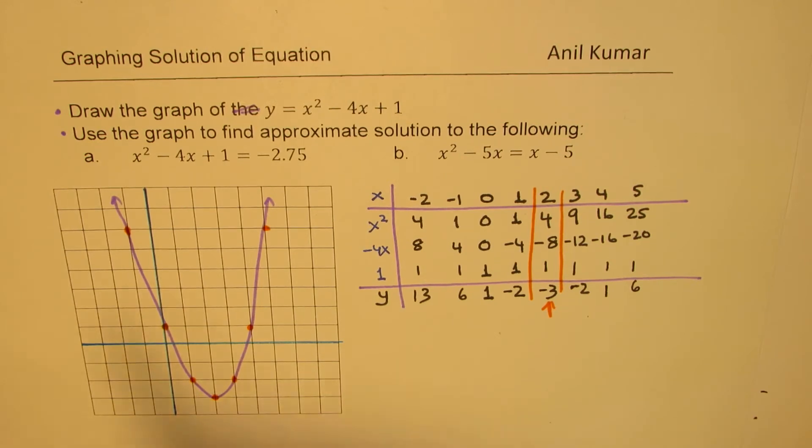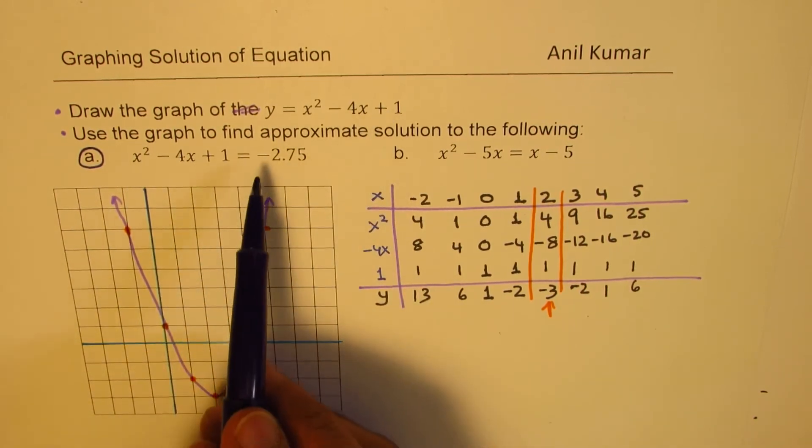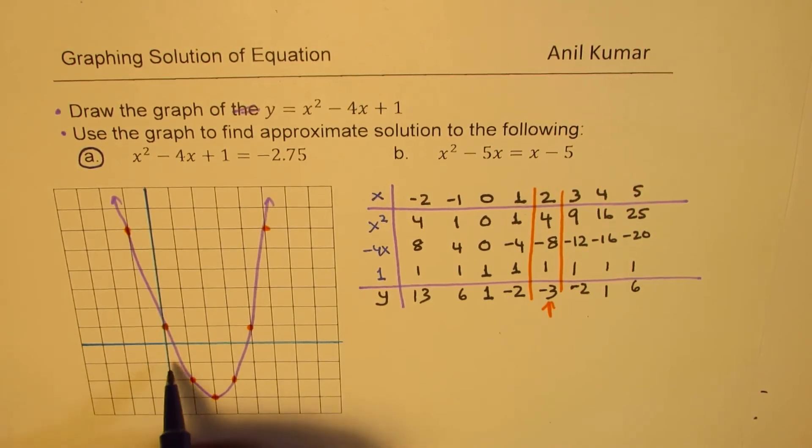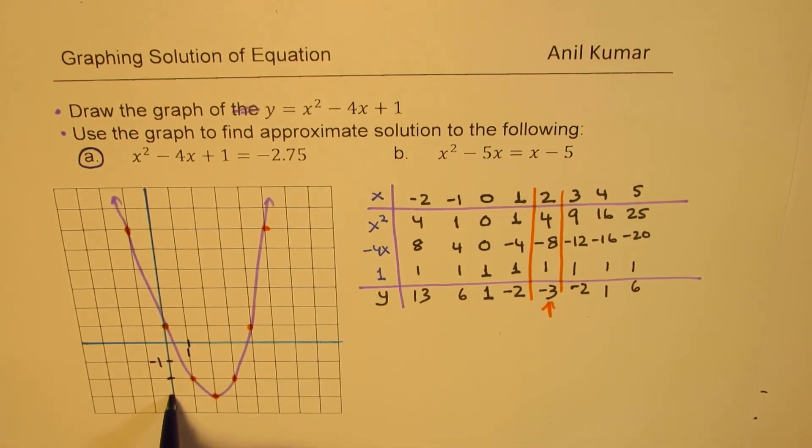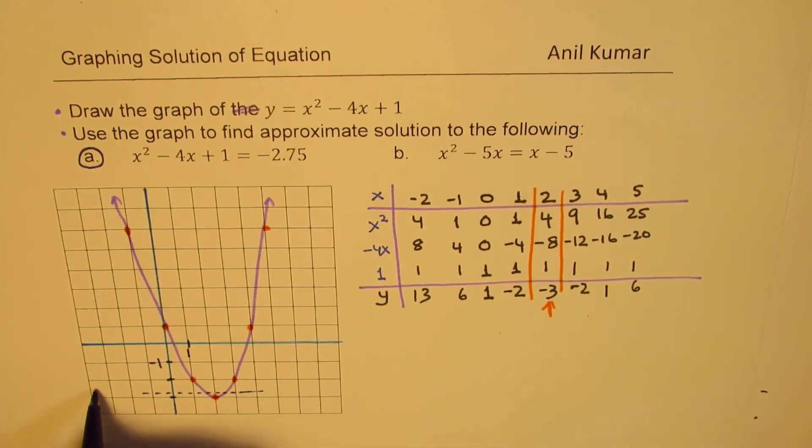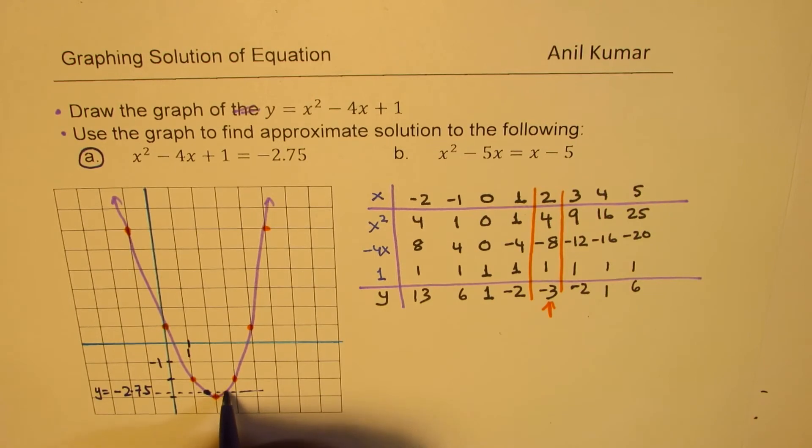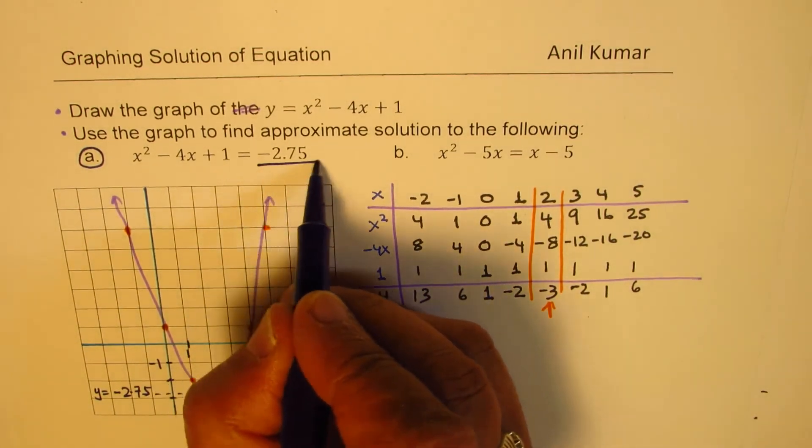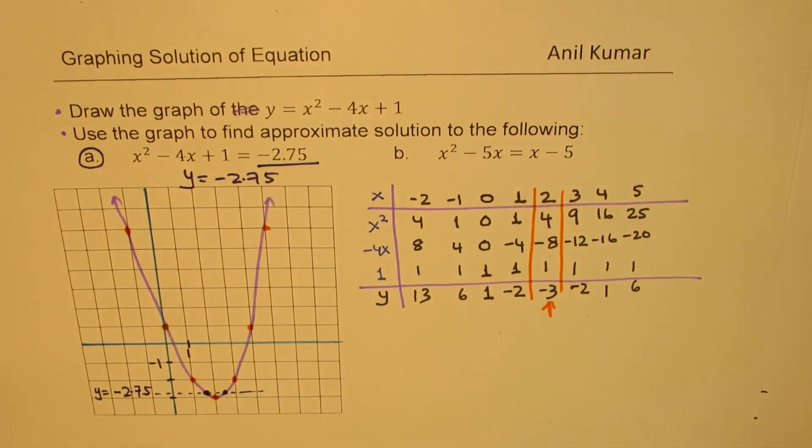Now the second part is to find the solution of this equation, x squared minus 4x plus 1, the graph of which we are given, equals to minus 2.75. Okay, so that is minus 1, this is plus 1. So minus 2, that is minus 3, which is the minimum. So 2.75 will be kind of here. So this is our line, which is y equals minus 2.75. So these two points on the graph are the solutions. So the intersection of y equals minus 2.75 with the given graph gives us the solution.